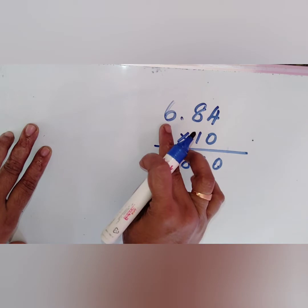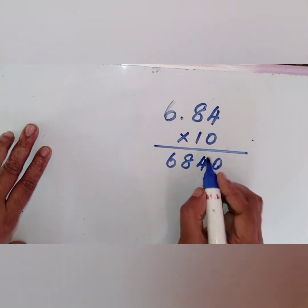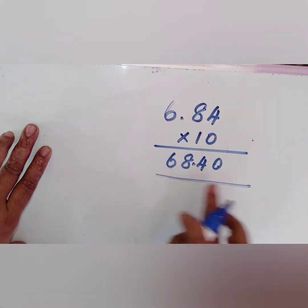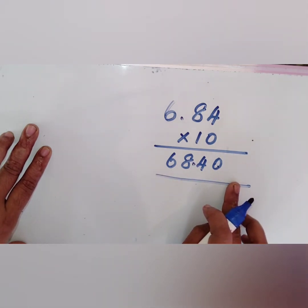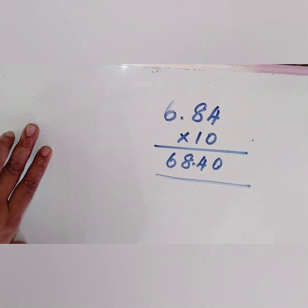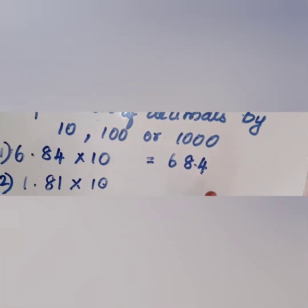Now, look at the question. It is 6.84, that is it has two decimal places. Same way from the right I counted and placed two places. It is 68.40. That is the answer 68.4 here.